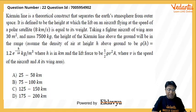This question says that a Kármán line is a theoretical construct that separates the Earth's atmosphere from outer space. It is defined as the height at which lift on an aircraft flying at the speed of a polar satellite is equal to its weight. Taking a fighter aircraft of wing area 30 m² and mass 7500 kg, the height of the Kármán line will be in the range.